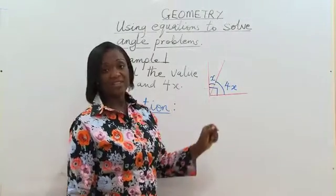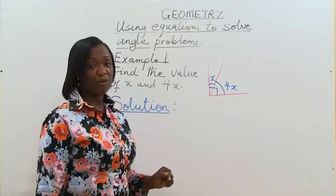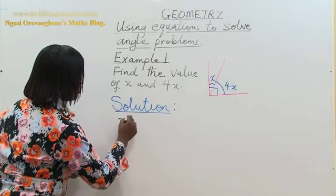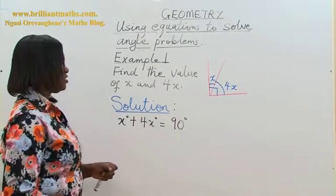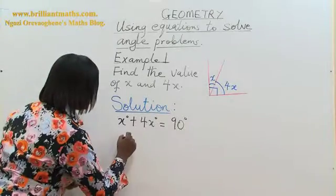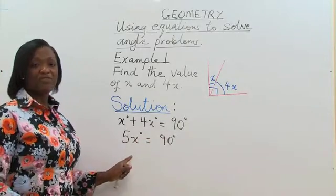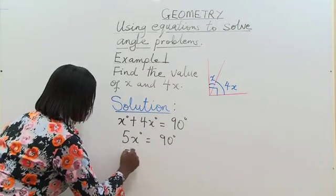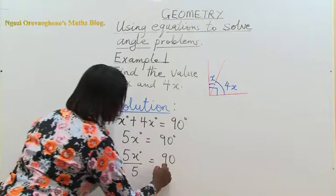So we want to find the value of x. And after we find the value of x, we can then find the value of 4x. So we know that x degrees plus 4x degrees is equal to 90 degrees. x and 4x are like terms. We are actually solving an equation here. So 5x degrees is equal to 90 degrees. To find the value of x, we divide both sides by 5. So we have 5x over 5 is equal to 90 over 5.